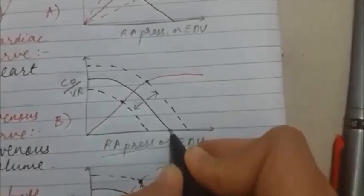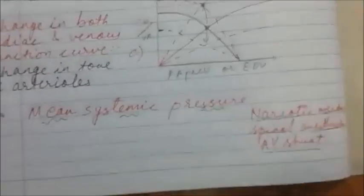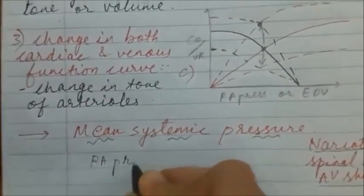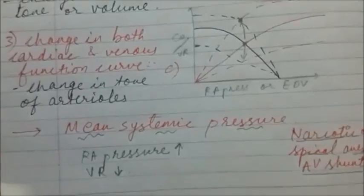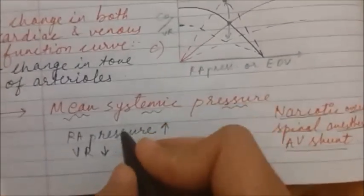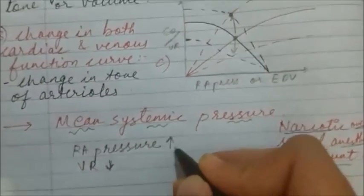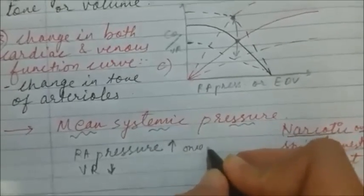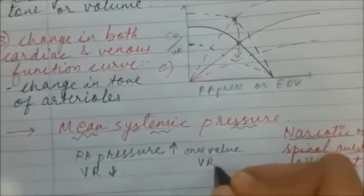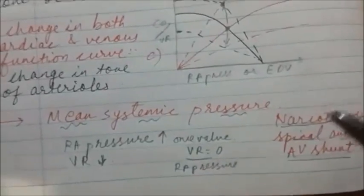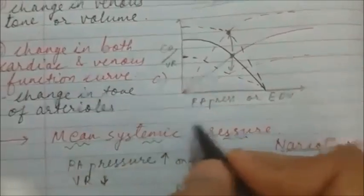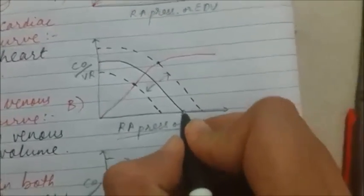Mean systemic pressure is shown on the graph. If you increase right atrial pressure, venous return will always decrease, because the vein has to apply more force to push blood into the right atrium. If you keep increasing right atrial pressure, there will be one value at which venous return becomes zero. This value of right atrial pressure at which venous return becomes zero is called mean systemic pressure. This is a hypothetical situation that never occurs in normal life.